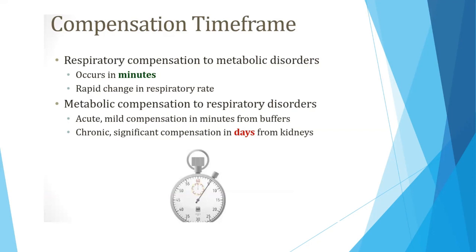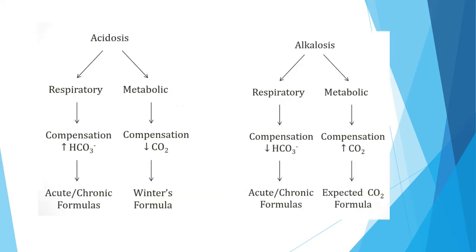For example, in respiratory acidosis with rising pCO2, the body increases bicarbonate, but the significant increase from the kidneys takes days. To summarize: in acidosis, if respiratory, compensation is increased bicarbonate; if metabolic, compensation is decreased CO2. In alkalosis, respiratory alkalosis compensation is decreased bicarbonate; metabolic alkalosis compensation is increased CO2.